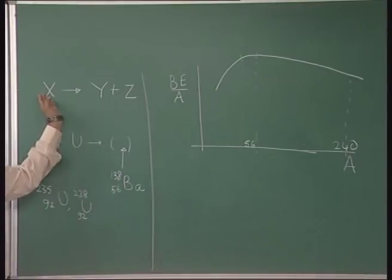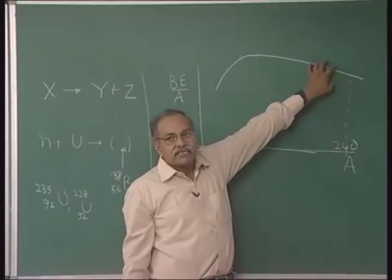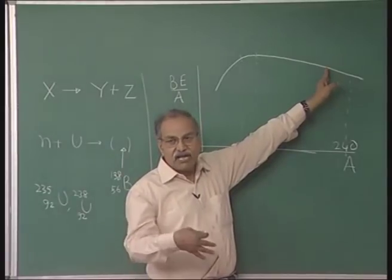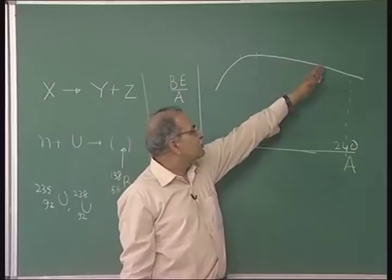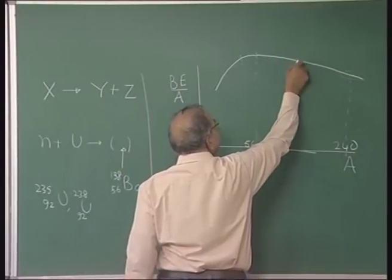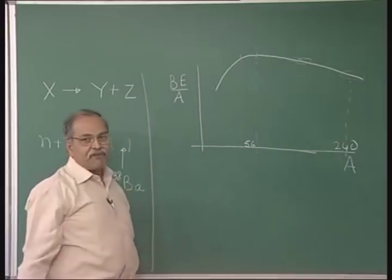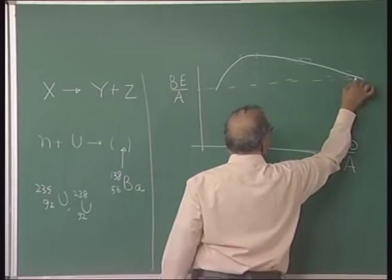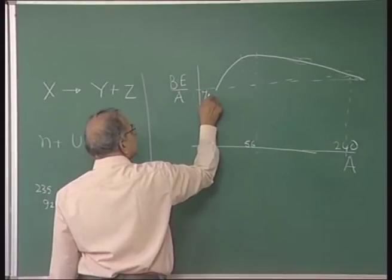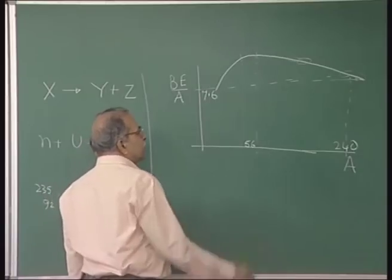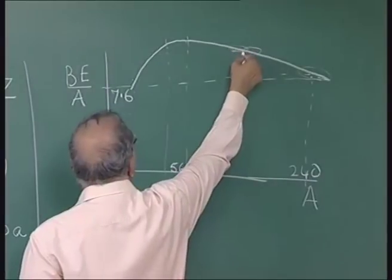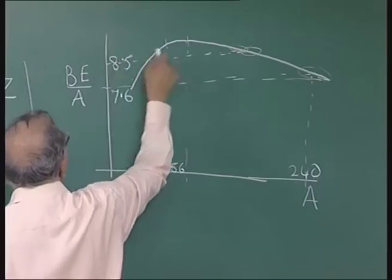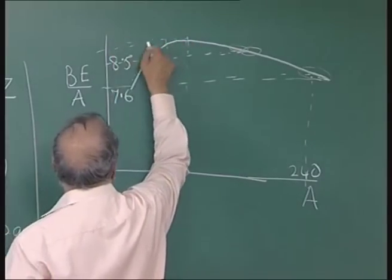In fission, the initial heavy nucleus X is sitting at the high-A end of this curve. When it splits into two parts, the mass number becomes roughly half, so the fragments land at a higher binding energy per nucleon region. In numbers, the binding energy per nucleon for the initial heavy nucleus is around 7.6 MeV per nucleon, while at half the mass number the value is around 8.5 MeV per nucleon; the maximum is around 8.9 MeV per nucleon.